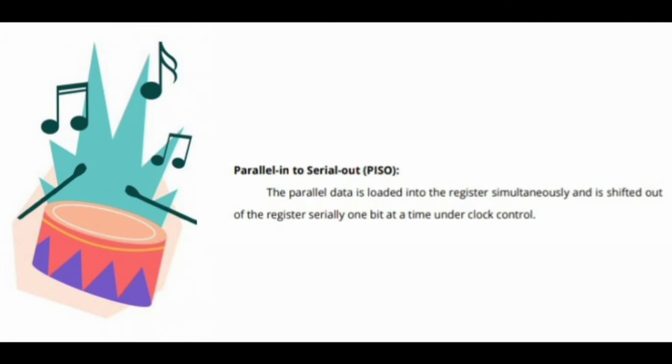First, parallel in to serial out: the parallel data is loaded into the register simultaneously and is shifted out of the register serially one bit at a time under clock control.